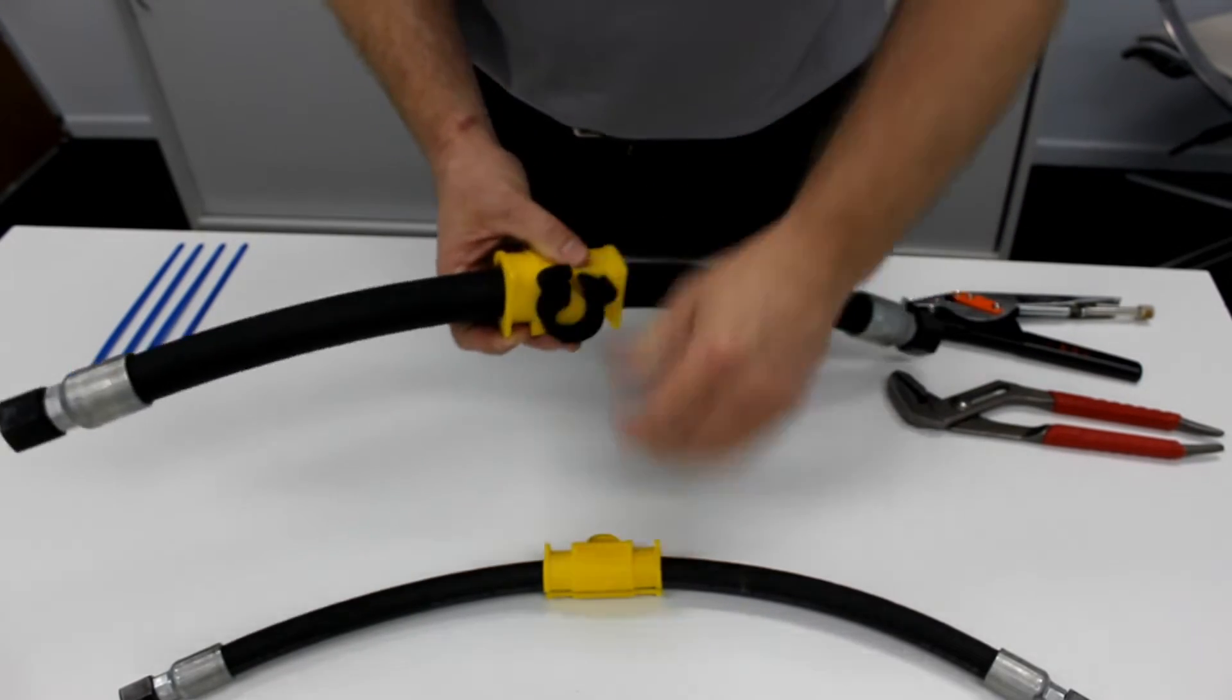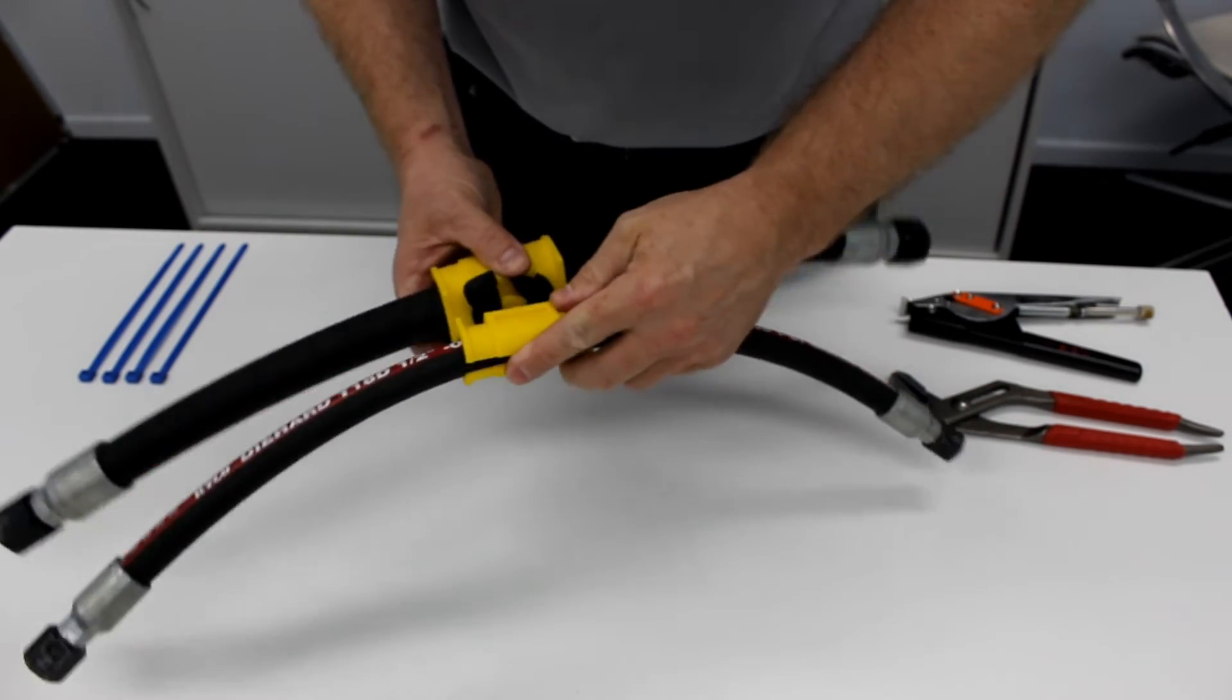Fit both the HoseMate clamps to the open joiner, then close the joiner fully.